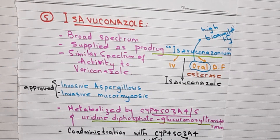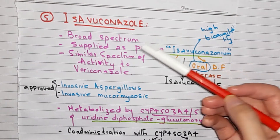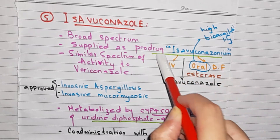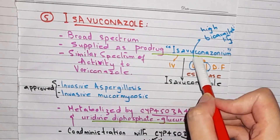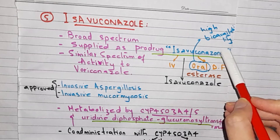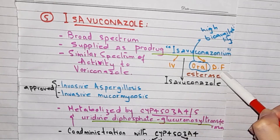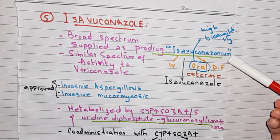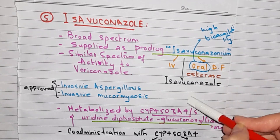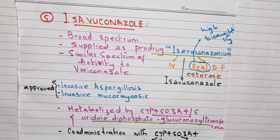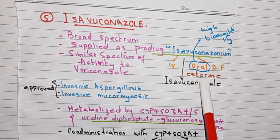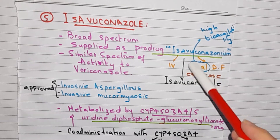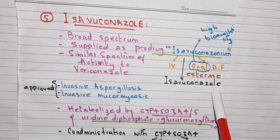Now we are going to discuss Isavuconazole. Isavuconazole is a broad spectrum drug available in both IV and oral dosage forms, with oral bioavailability of more than 98%. Isavuconazole is actually a prodrug present in blood, which is converted into active Isavuconazole by a serum enzyme.